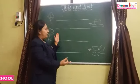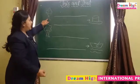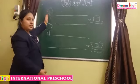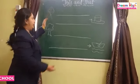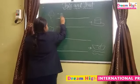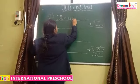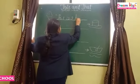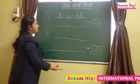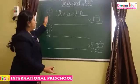Okay, I will show you the example. See, this is a kite. Kite is on the left side of my hand. Then we will write: 'This is a kite.' Okay children, kite is on my left side.